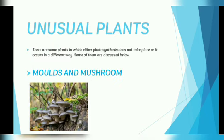Next topic is unusual plants. There are some plants in which either photosynthesis does not take place or it occurs in a different way. The first category is molds and mushrooms. These are non-green plants which do not have chlorophyll, hence they cannot make their food. They get their food from decaying plants and animals.